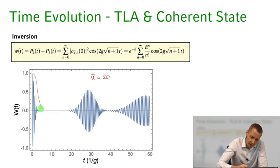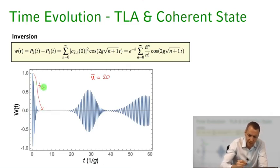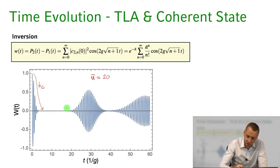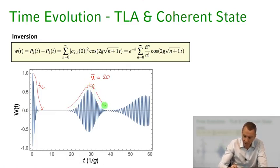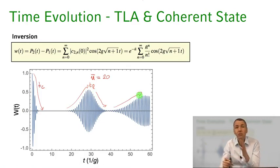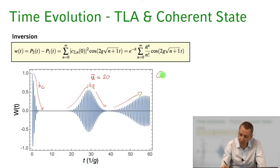In the semi-classical treatment, starting with the atom in the excited state and a classical light field, we would expect cosinusoidal Rabi oscillations to persist forever without damping. Instead, we find the Rabi oscillations start out and then they seem to collapse on a timescale t_C, then they revive at a later time t_R, then they collapse again and revive again. This phenomenon we call the collapse and revival of the Rabi oscillations.